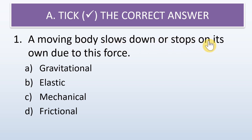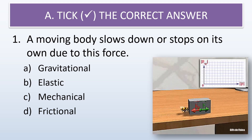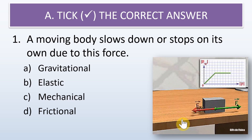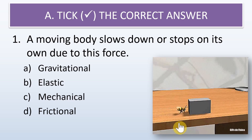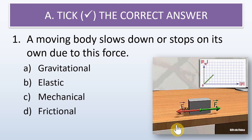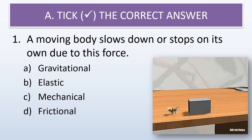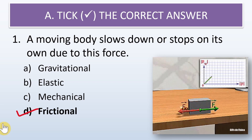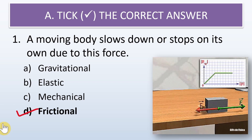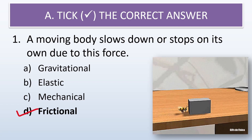The options are gravitational, elastic, mechanical, or frictional. Why do you think a moving body slows down or stops on its own? For example, there is an ant which is forcing a block to move — what slows it down? The correct answer is frictional force. It is frictional force that slows down or stops a moving object.